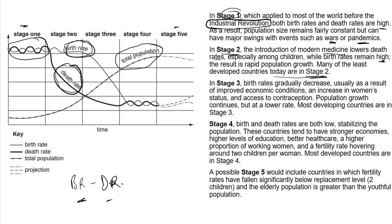When you get to stage three, the birth rate begins to decrease and the death rate is also decreasing further. Birth rate gradually decreases, usually as a result of improved economic activity, an increase in women's status, and access to contraception. Population growth continues but at a lower rate. Most developing countries are in stage three.